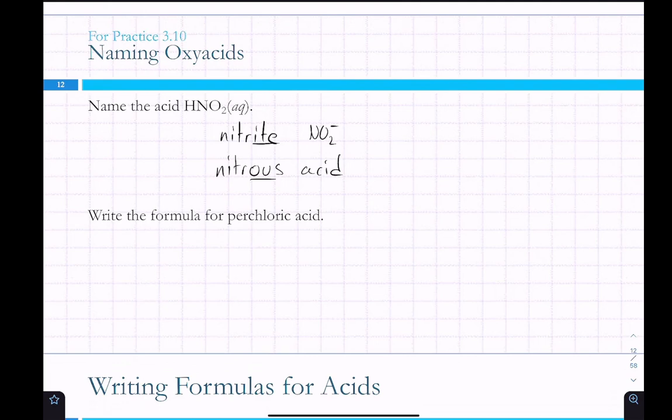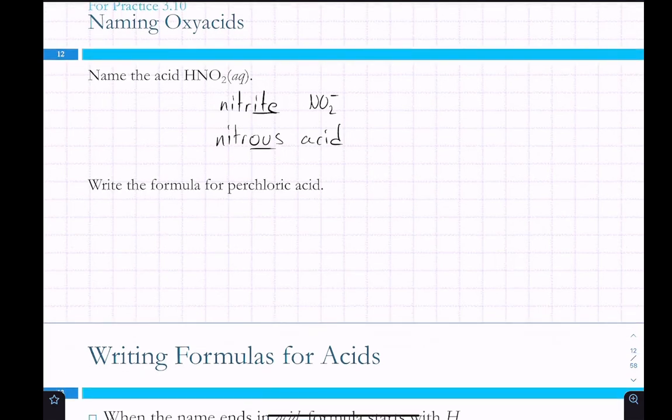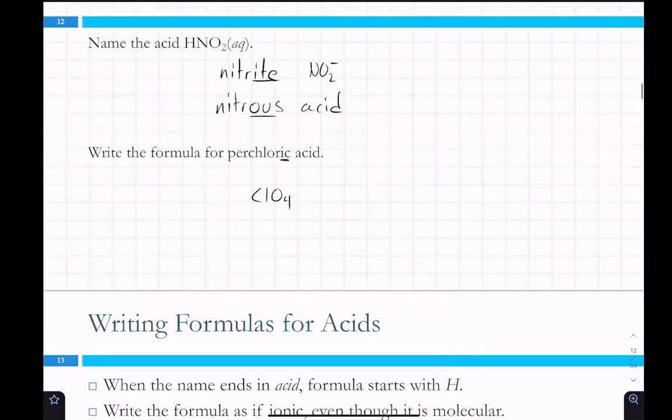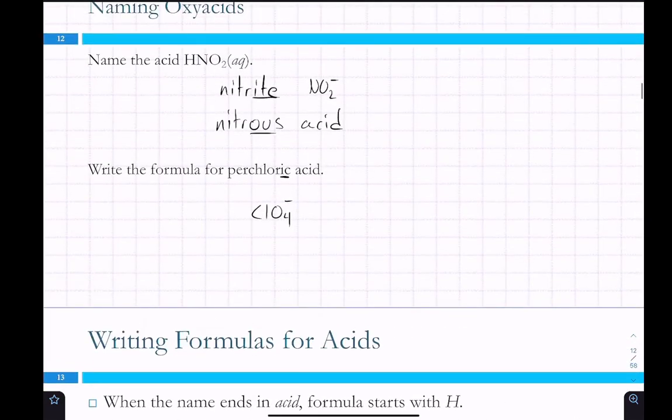Perchloric acid. What is that IC ending? If we want to go back to the oxyanion. ATE. Yeah. So, we change ATE to IC when we're naming the acid. So, perchloric acid is going to be ClO4-. It helps to write out the oxyanion first, because then you know how many charges the oxyanion has, and that's how many hydrogens it gets. So, HClO4.